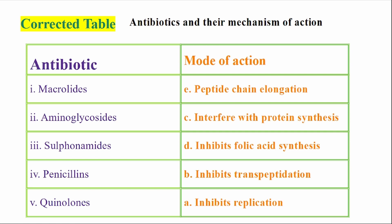To summarize: Macrolides - peptide elongation block. Aminoglycosides - interfere with protein synthesis. Sulphonamides - inhibits folic acid synthesis. Penicillins - inhibits transpeptidation. Quinolones - inhibits replication. This concludes the matching questions for this class; more questions will be covered in another class.